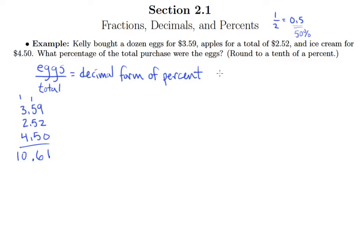So what we're going to end up doing here is we're going to take the $3.59 and divide it by $10.61, and again, this is going to give us the decimal form of the percentage that we're trying to find. Now, before we actually perform the division, let's understand how the number that we get from dividing these is going to compare to the answer we want to give.